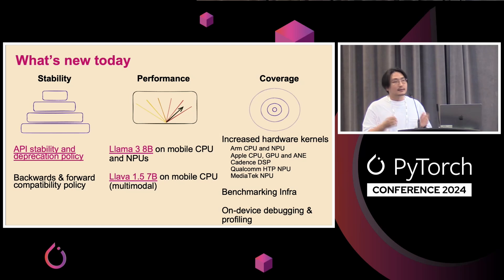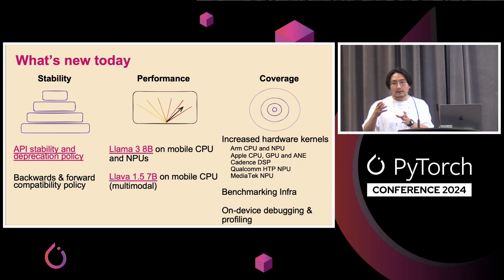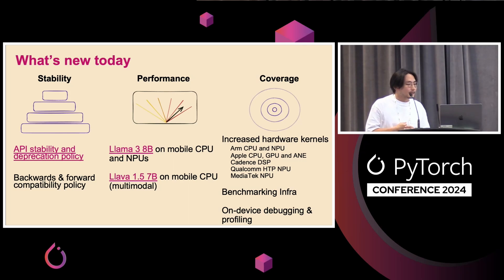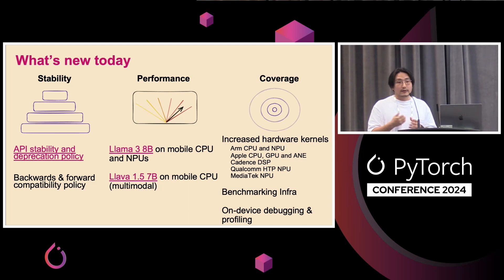Three things that are new today: stability, performance, and coverage. On stability, we are focusing on robustness. On performance, those two examples of LLaMA and LLaVA running quite fast allowed us to find all the critical bottlenecks and make performance improvements that can be generalized to other models. On coverage, we've increased kernel and accelerator support, built a benchmarking infra continuously leveraging AWS Device Farm to run models in the open-source environment, and added on-device debugging and profiling support.